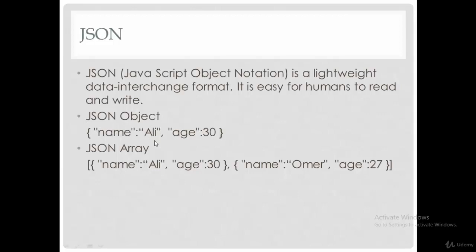In JSON array, the JSON array consists of a set of JSON objects. Like this example, we have two employees. The first one with name Ali and age 30.